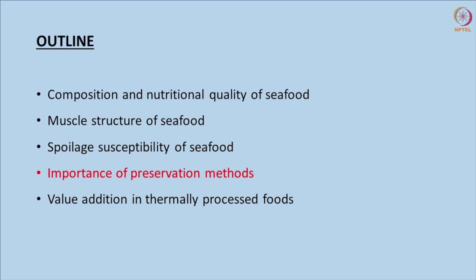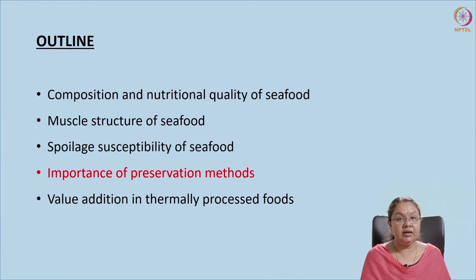Hello everyone, welcome once again. In today's session we are going to discuss about preservation technology. Just to sum up what we have seen in previous classes, we discussed about the composition and nutritional quality of seafoods, different major and micro components, the muscle structure in seafoods, and after that we saw the spoilages and how spoilage can be assessed. In today's class we are discussing about preservation methods, and why preservation is important — because fish is a perishable commodity and has high moisture content, it has to be preserved so that it does not undergo spoilage.